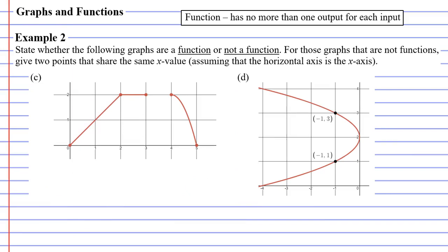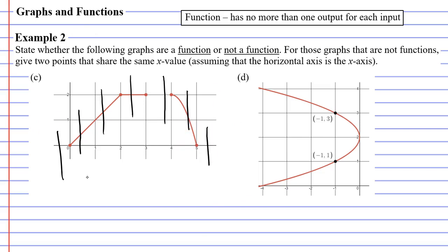Moving on to question C — when I draw vertical lines I only pass through one point, although there are times where I pass through no points. You can see this where we have a gap, and also on the left and right hand side where the vertical line passes over no points. By definition, a function has no more than one output for each input, so it's actually okay to have zero outputs for an input. This is a function — you're just not allowed to have two or more points.